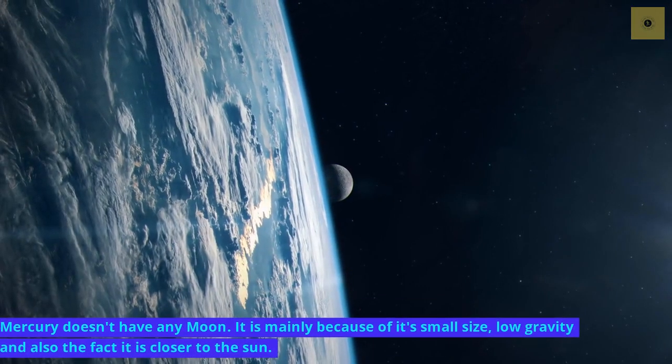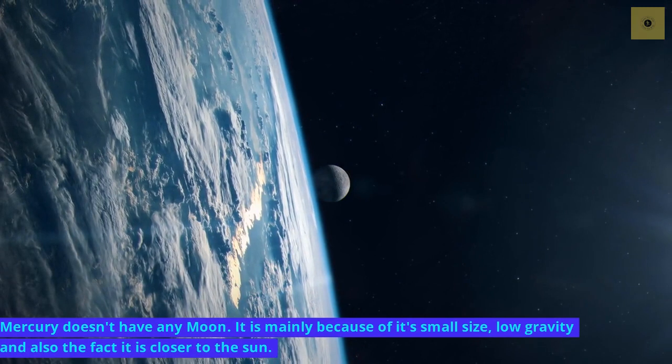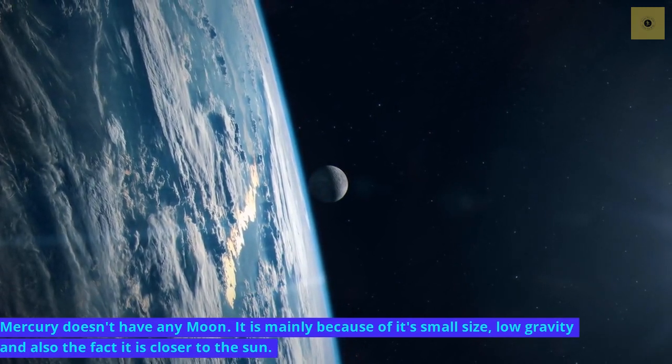Mercury doesn't have any moon. It is mainly because of its small size, low gravity, and also the fact it is closer to the Sun.